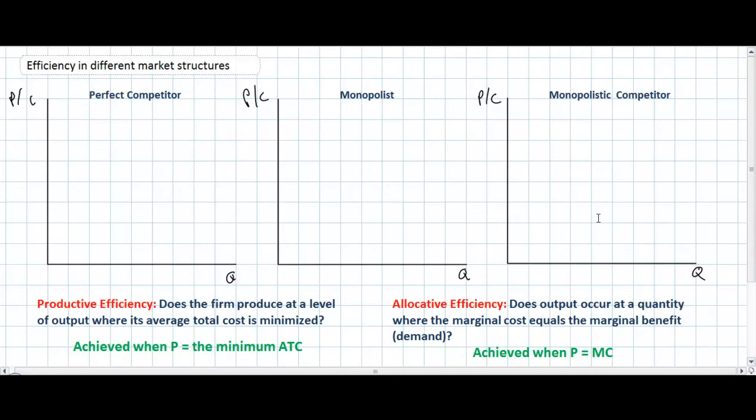In this video lesson we're going to examine efficiency in different market structures. This is the final lesson in a series on the theory of the firm, in which we examine the competitive behavior of firms in market structures ranging from perfect competition to pure monopoly.